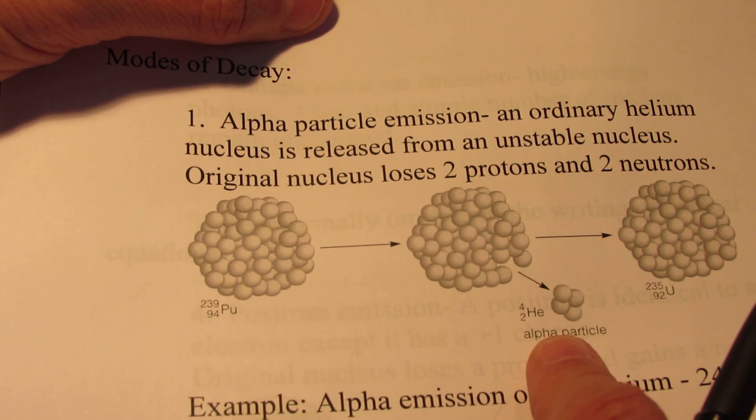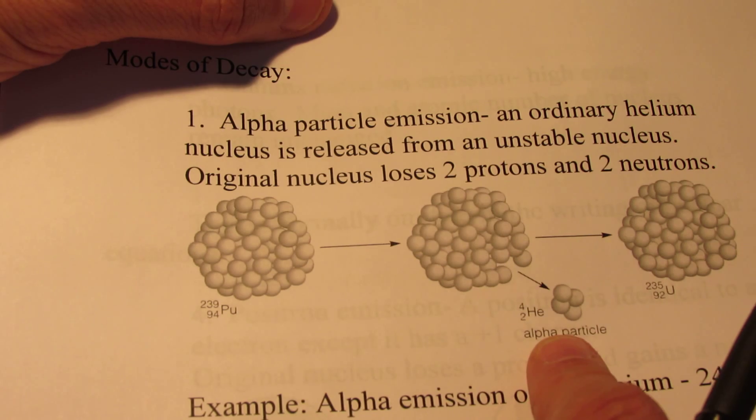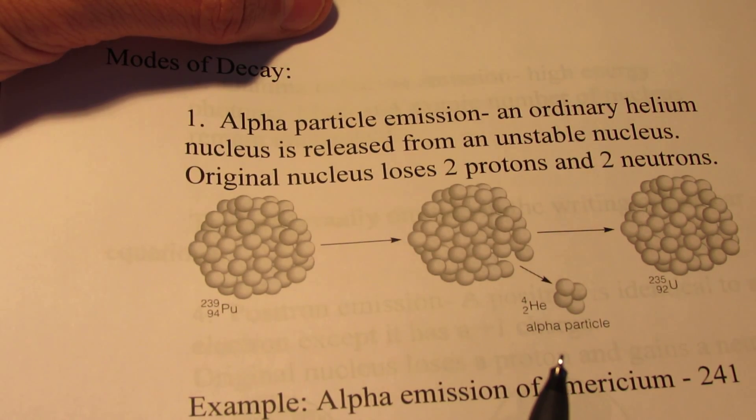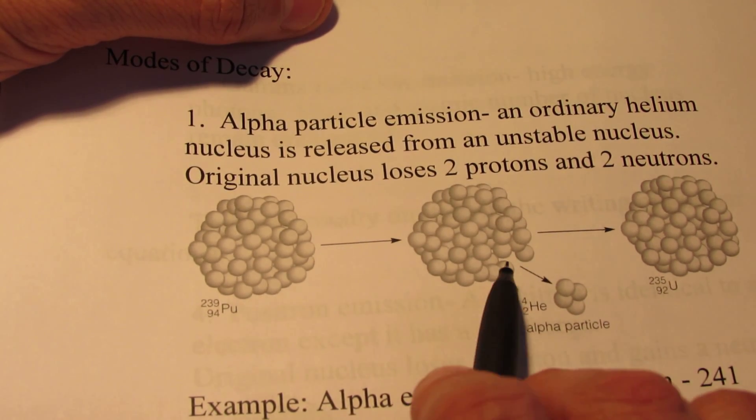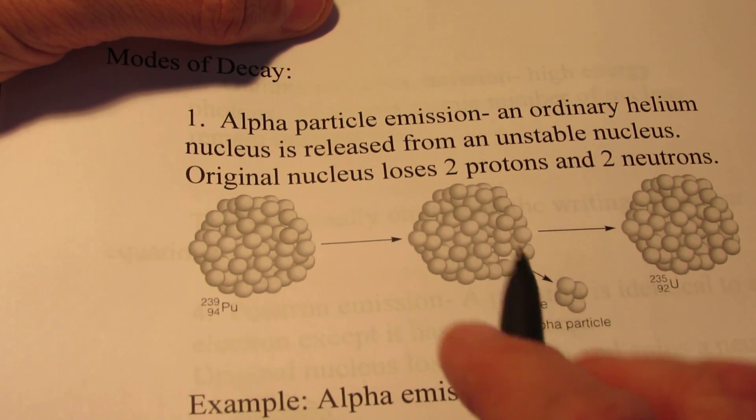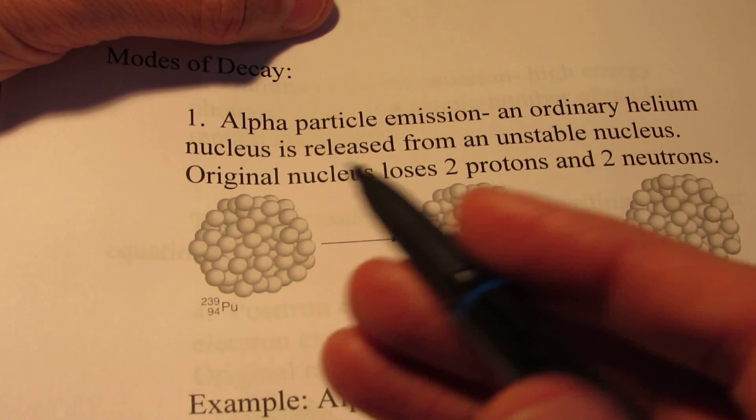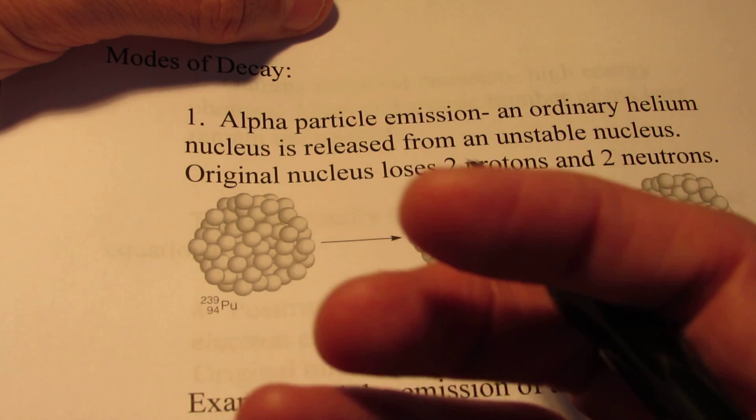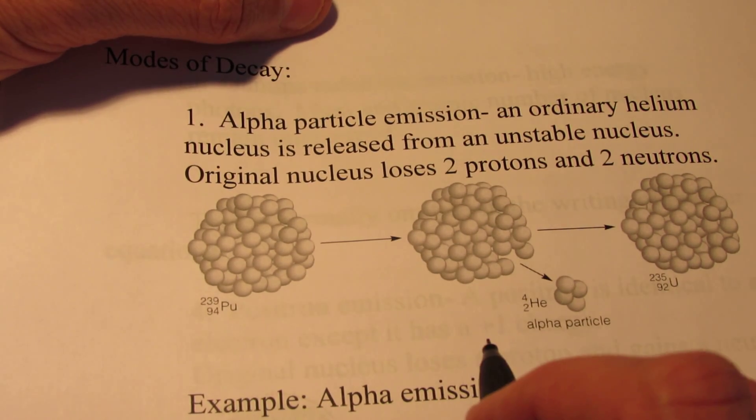Alpha particles travel between a tenth and a twentieth the speed of light. They're being ejected from the nucleus of that atom at a very high speed. And as a result, they are much more energetic than a simple helium atom at room temperature.